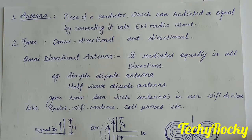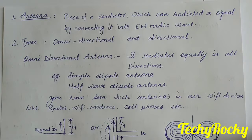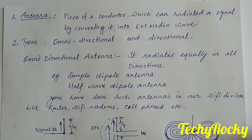Basically, two types of antennas exist: omnidirectional and directional. Omnidirectional means an antenna which can radiate equally in all directions — 360 degrees in a spherical way — with equal signal strength in all directions. The second type is a directional antenna, which radiates more energy in a particular direction.